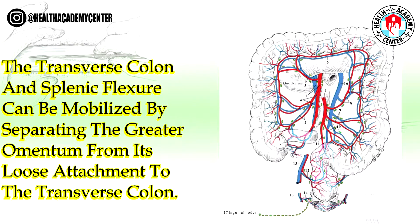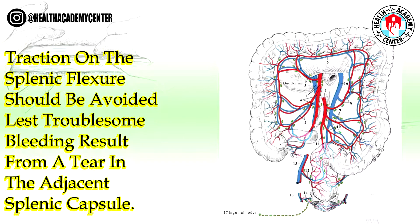The transverse colon and splenic flexure can be mobilized by separating the greater omentum from its loose attachment to the transverse colon. Traction on the splenic flexure should be avoided, lest troublesome bleeding result from a tear in the adjacent splenic capsule.